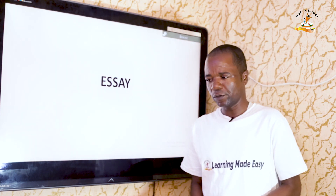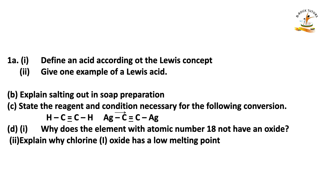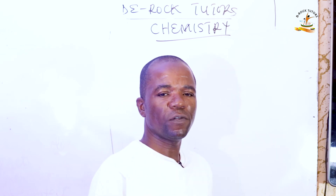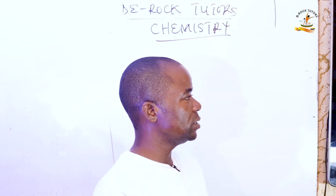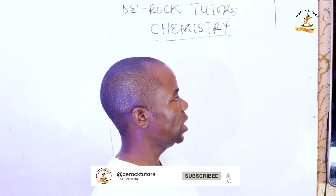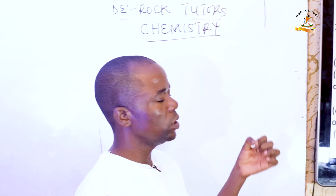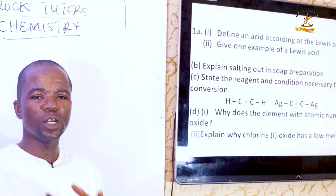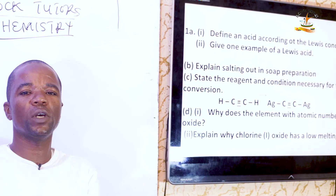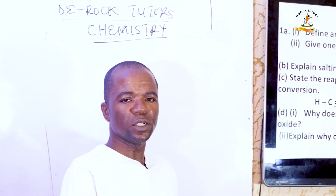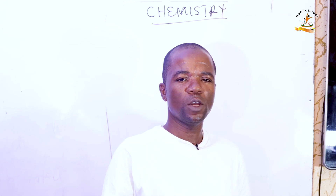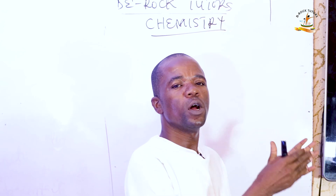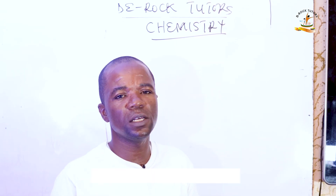Now let's get started with the very first question. Define an acid according to the Lewis concept. We know that an acid can be defined in several ways — there is the Brønsted-Lowry theory, the Arrhenius theory, and the G.N. Lewis theory. According to the Lewis concept, an acid is defined as a substance that can accept lone pairs of electrons from other substances, usually Lewis bases, to form a new compound.